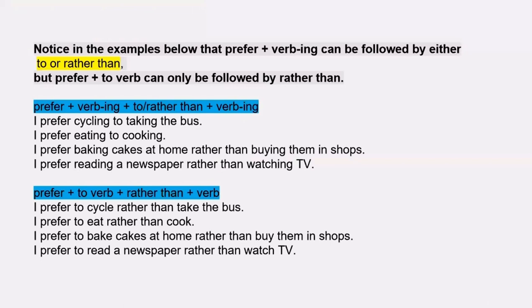But when we compare two things, the question has been asked: 'Do you prefer cycling or taking the bus?' So what would be the answer? I prefer cycling to taking the bus. When you use a verb with ING, you can also use 'rather than.' So: 'I prefer cycling to taking the bus,' or 'I prefer cycling rather than taking the bus.' Both are correct.